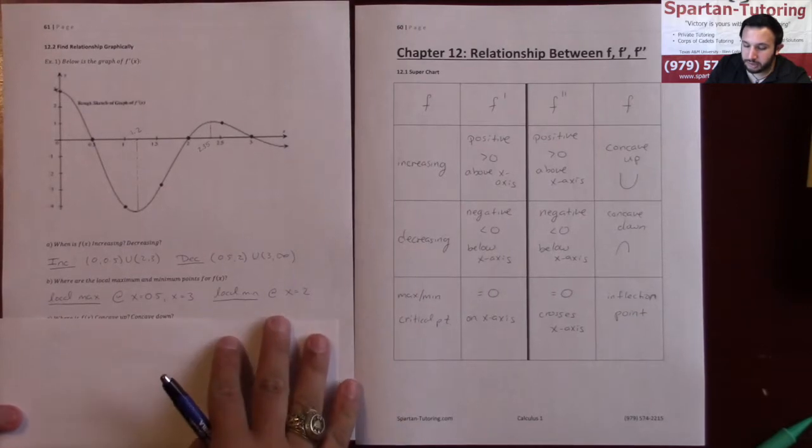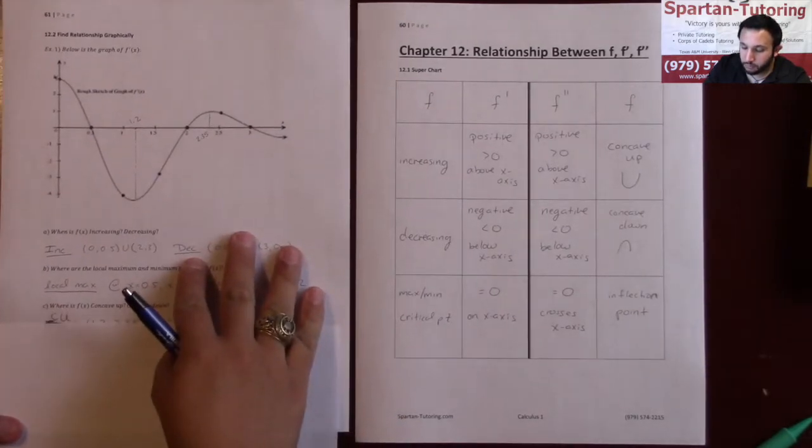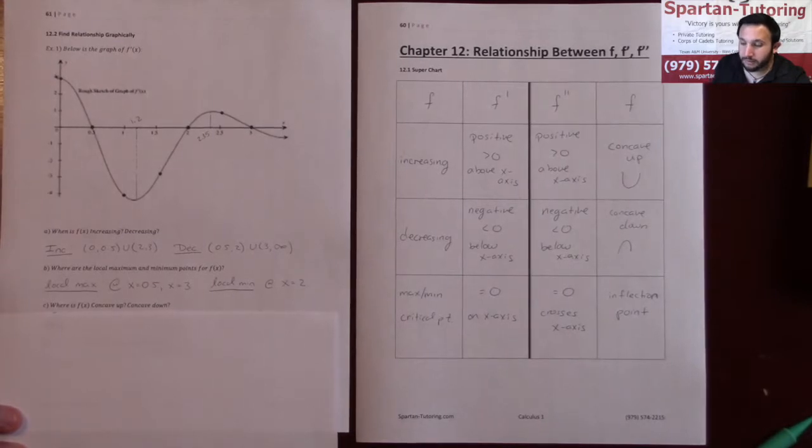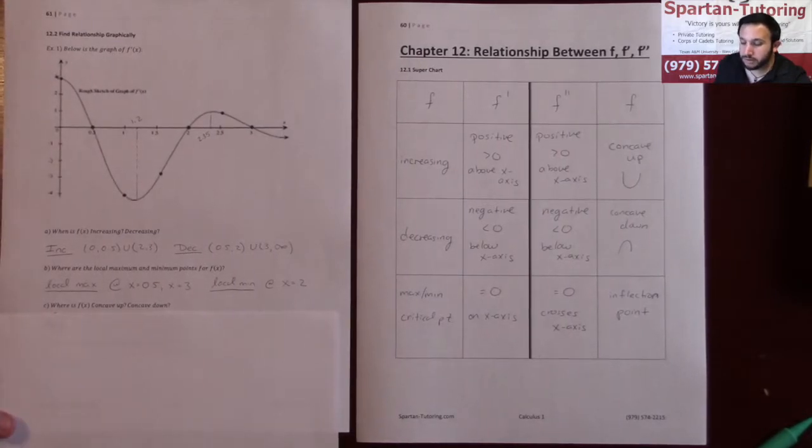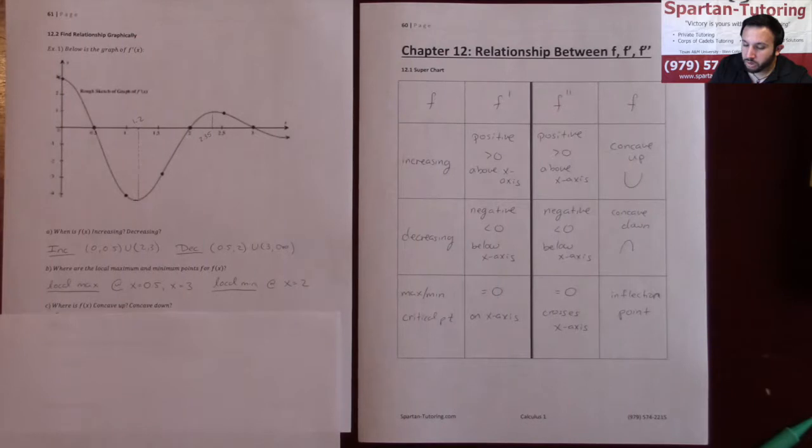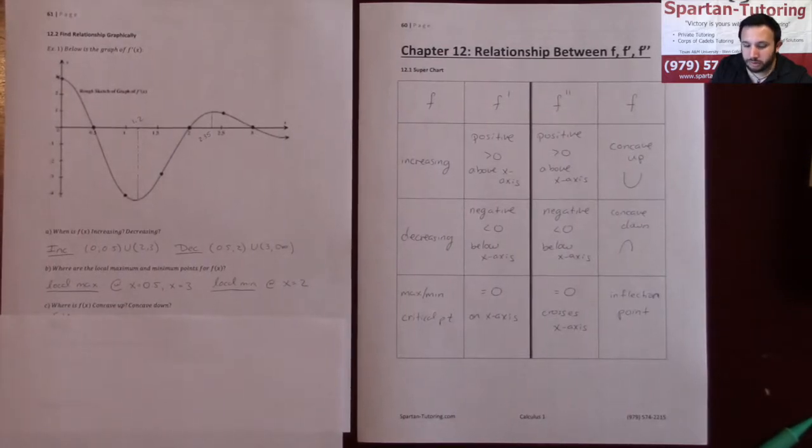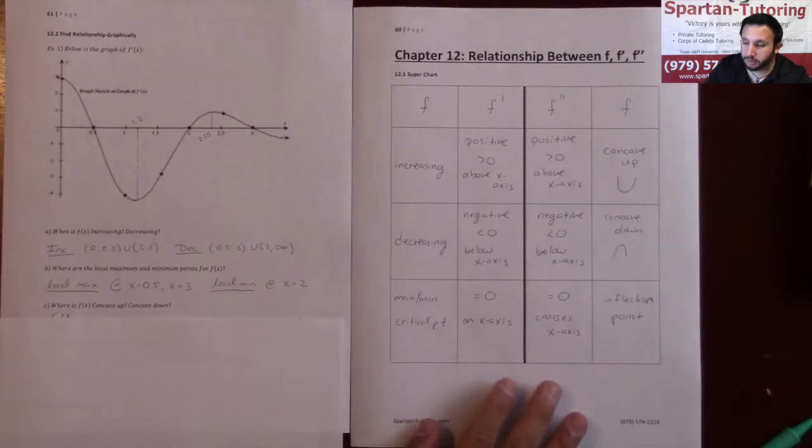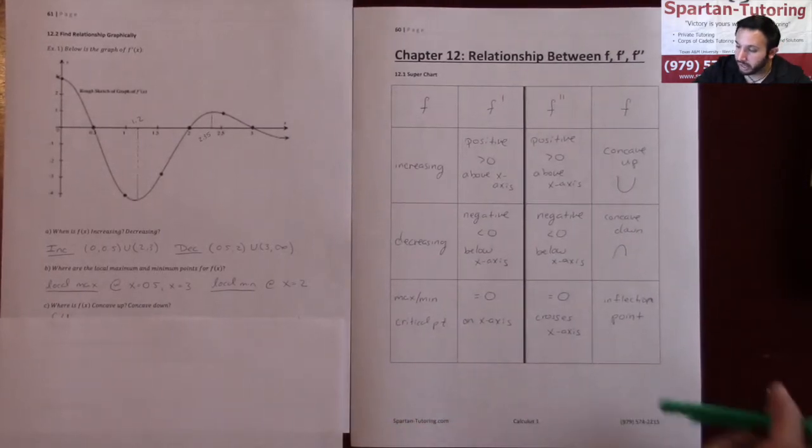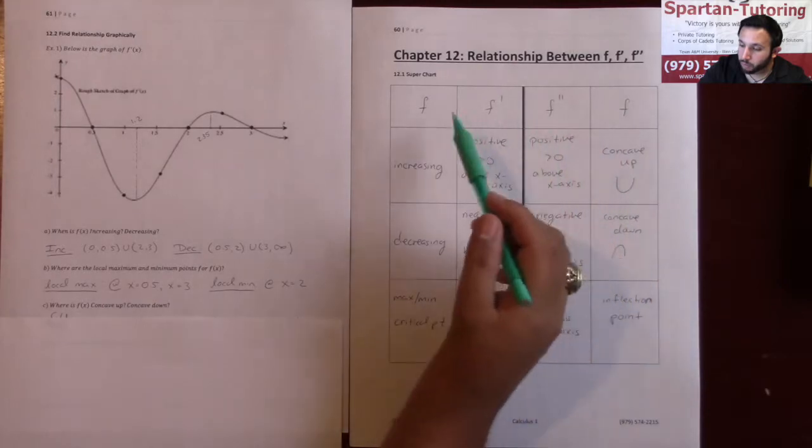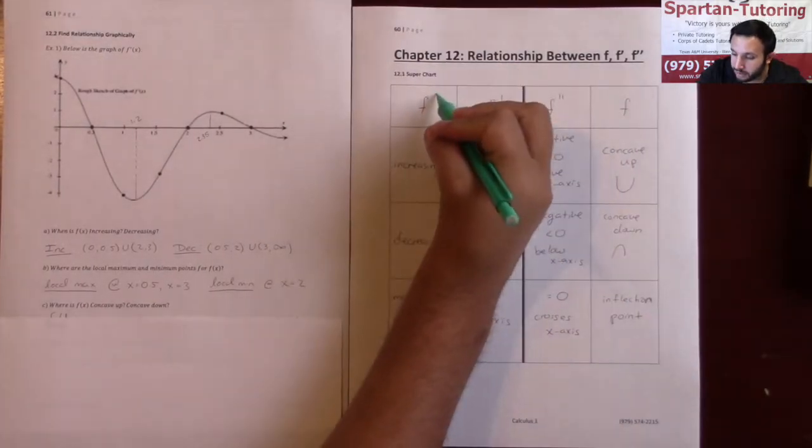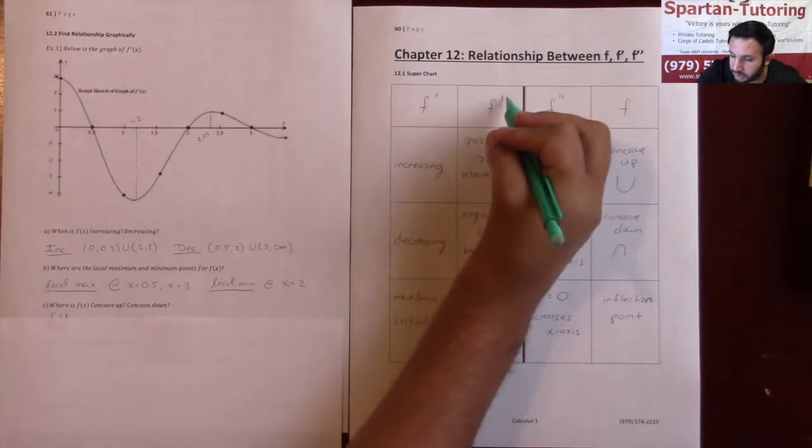Now let's take a look at part C. It says where is f of x concave up, where is f of x concave down? Well, normally you would need the second derivative to do that. But you do know what to do because we have the super chart. We're given the graph of f prime, but the relationship between f and f prime is the exact same relationship as f prime and f double prime.